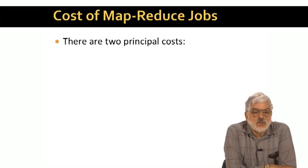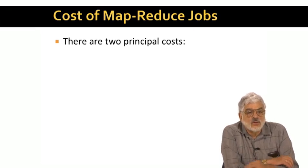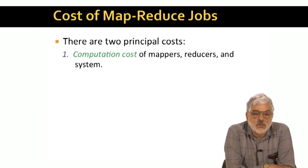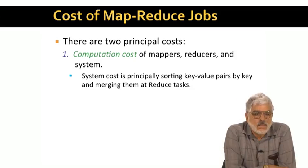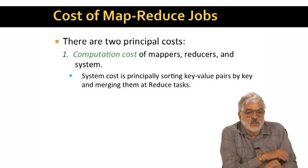When we run a MapReduce job on a public cloud like EC2, we pay for two things: rental of processors or compute nodes, and the transportation of data across the network. Different clouds may have different charging schemes, but we can still separate the two costs into a computation cost of executing the mappers and reducers, plus the computation done by the system. The heaviest computation cost associated with the system is the sorting of key-value pairs by key, and merging the values with a common key that are generated by different MapTasks.